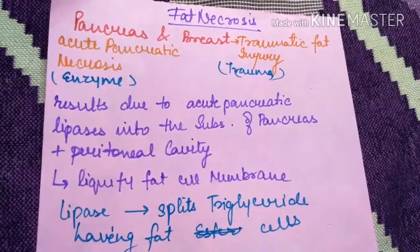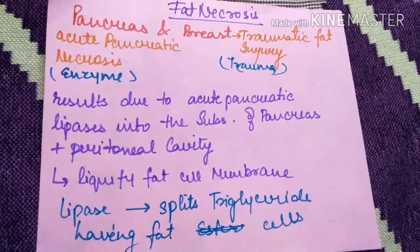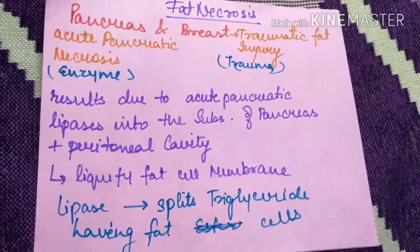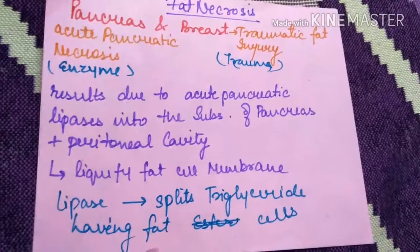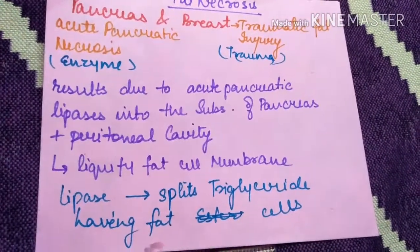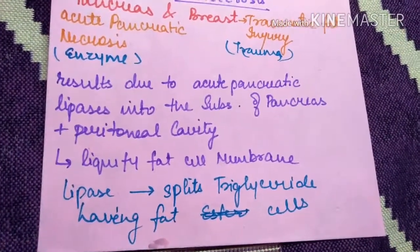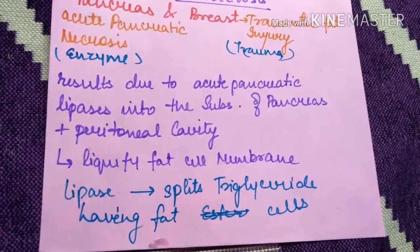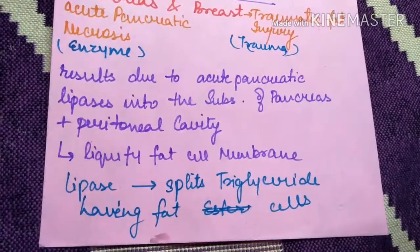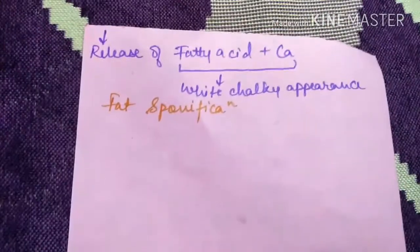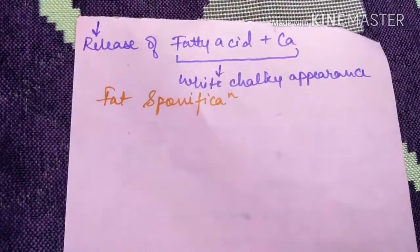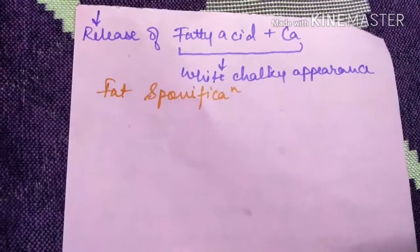Fat necrosis mainly occurs in the pancreas, which is acute pancreatic necrosis — enzymatic. There is also breast fat necrosis, which is traumatic fat injury. In pancreatic fat necrosis, acute pancreatic lipases go into the substance of pancreas and peritoneal cavity, where they liquefy fat cell membranes. The lipase splits triglycerides in fat cells, releasing fatty acids and calcium, which gives a white chalky appearance — this is fat saponification.